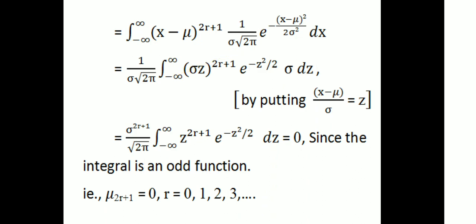We get σ raised to 2r+1 divided by √(2π), times the integral from minus infinity to infinity of z raised to 2r+1 times e raised to minus z²/2 dz. Since 2r+1 is an odd power, this integrand is an odd function. The integral of an odd function from minus infinity to infinity equals 0.